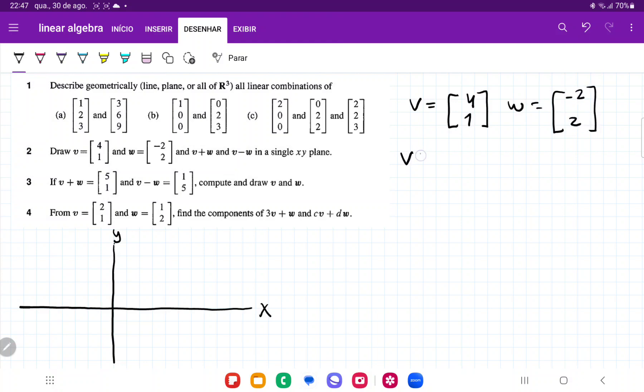Then we have that v plus w is equal to, well, we just add the first components. So 4 plus -2 is 2, and then 1 plus 2 is 3.